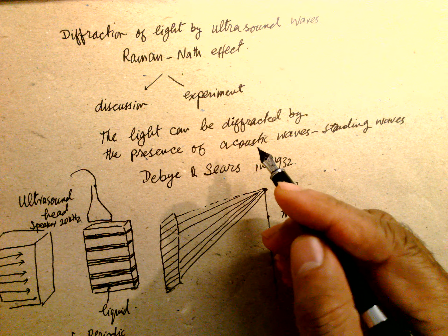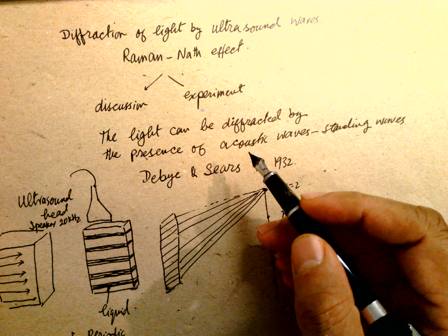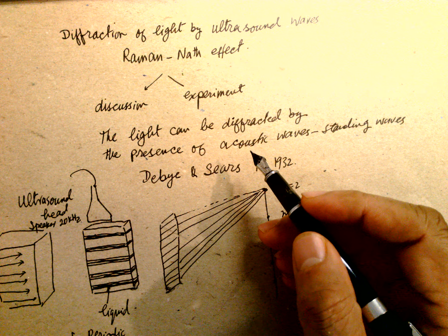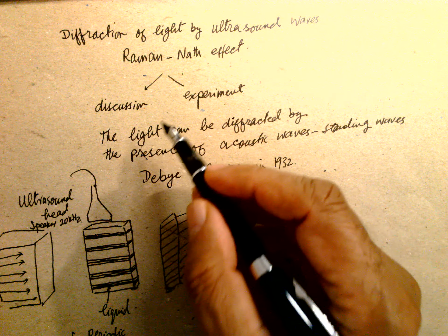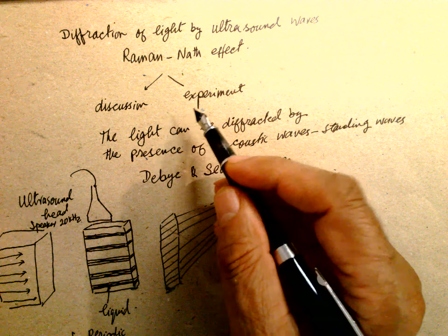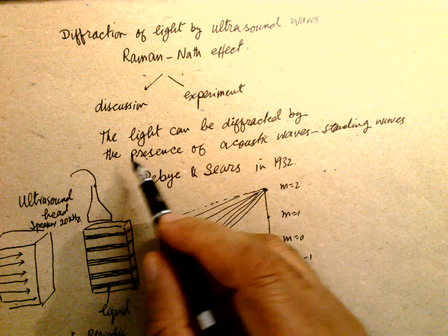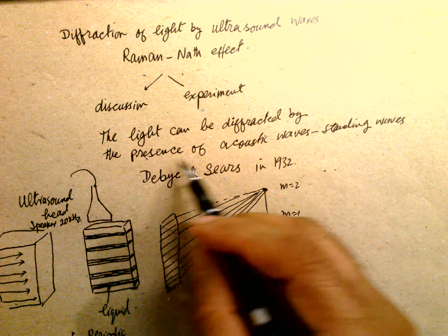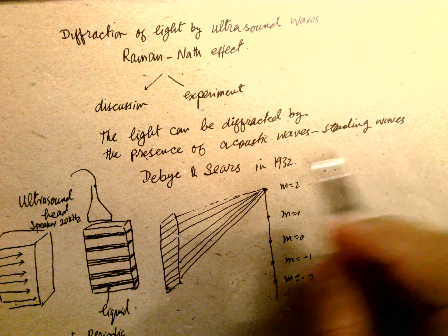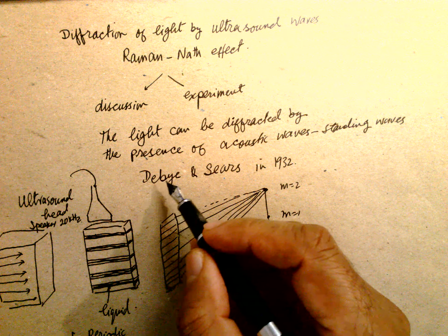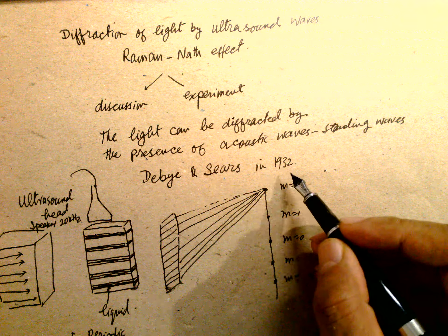Today's topic is the diffraction of light by ultrasonic waves. This is the Raman-Nath Effect. We will discuss a few aspects of theory and experiment. Light can be diffracted by the presence of an acoustic standing wave. This theory was proposed by Debye and Sears in 1930.